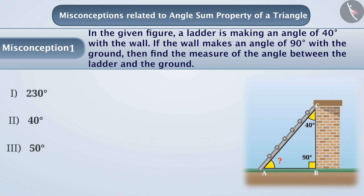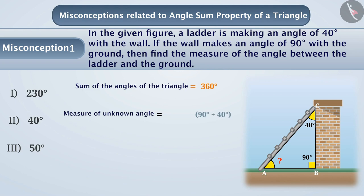Children don't face any problem understanding that the angle between the wall and the ground is 90 degrees. But they make mistakes while finding the unknown angle. Some students think that the sum of the angles of a triangle is 360 degrees. They subtract the sum of the given angles from 360 degrees and find the measure of the unknown angle as 230 degrees. With this understanding, option 1 is chosen, which is an incorrect answer.